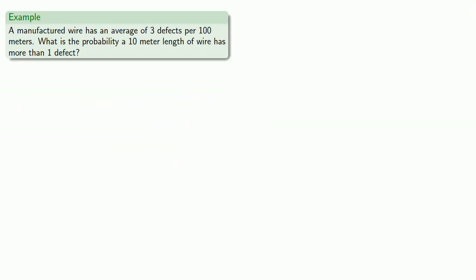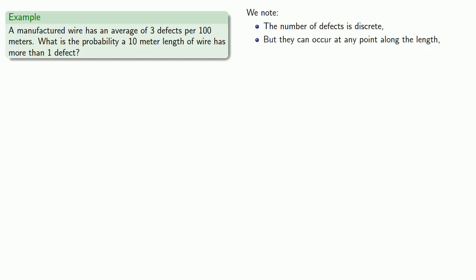Or maybe we have a manufactured wire with an average of 3 defects per 100 meters. What's the probability that a 10-meter length of wire has more than one defect? We note that the number of defects is discrete, but they can occur at any point along the length. So a Poisson distribution is appropriate.